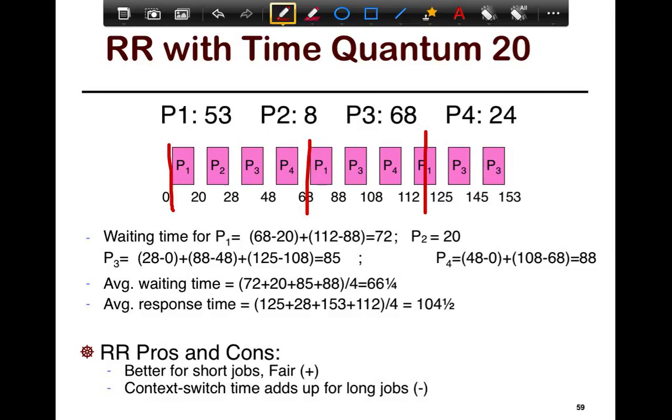if you look at when each of these finish, so the first one finishes at 125, P2 finishes at 28, P3 finishes at 153, right? And P4 finishes at 112, so 125, 28, 153, 112. So, if you look at the average response time, that's 104 and a half.